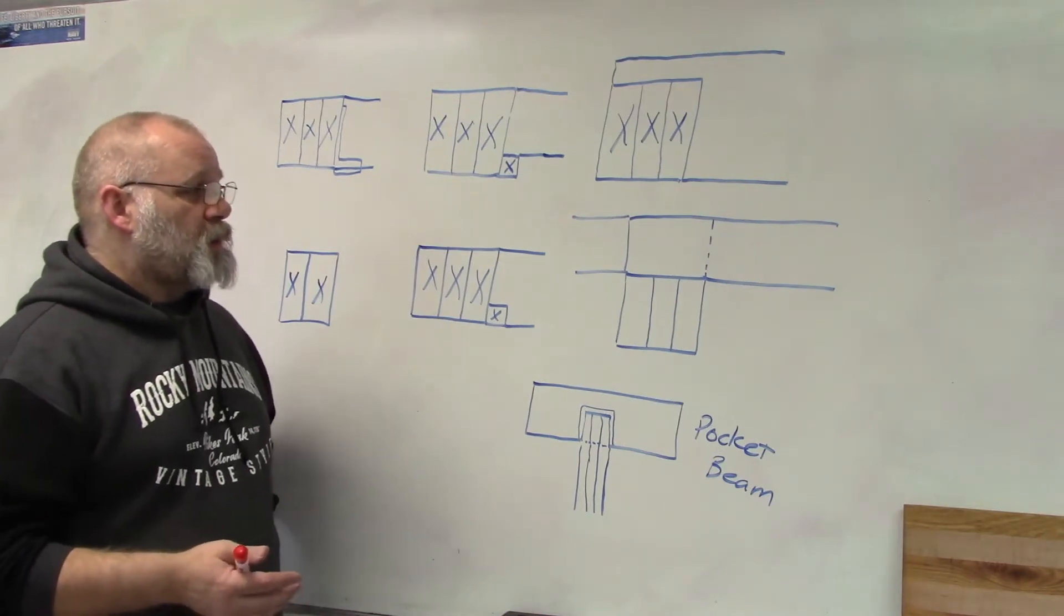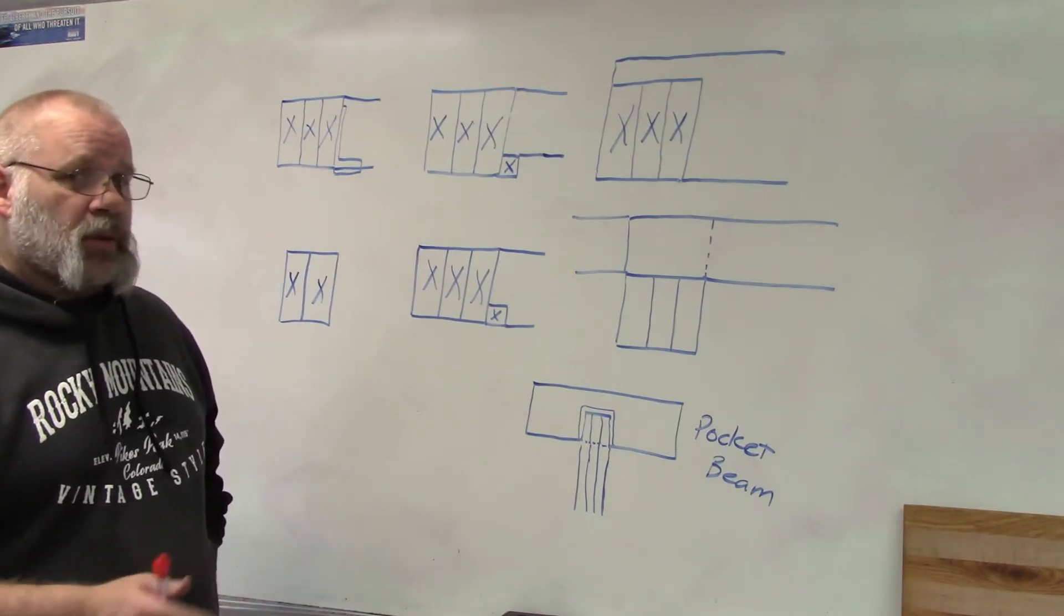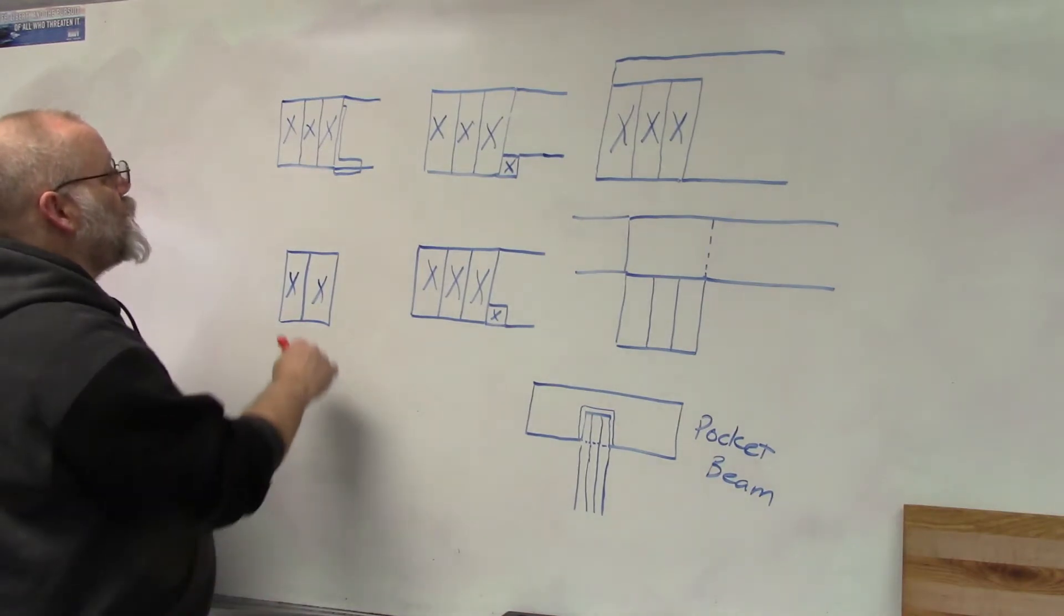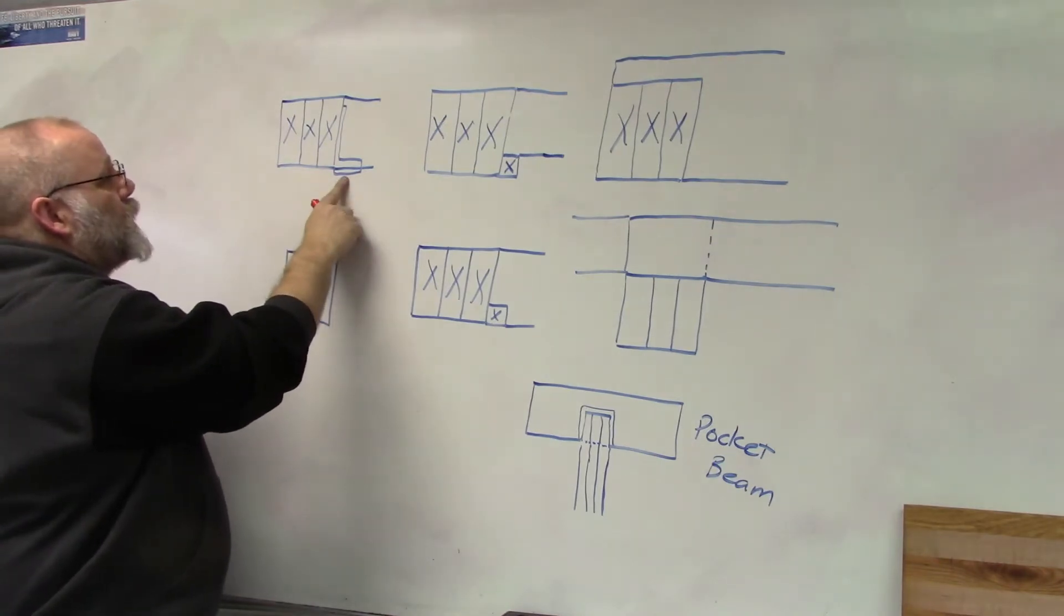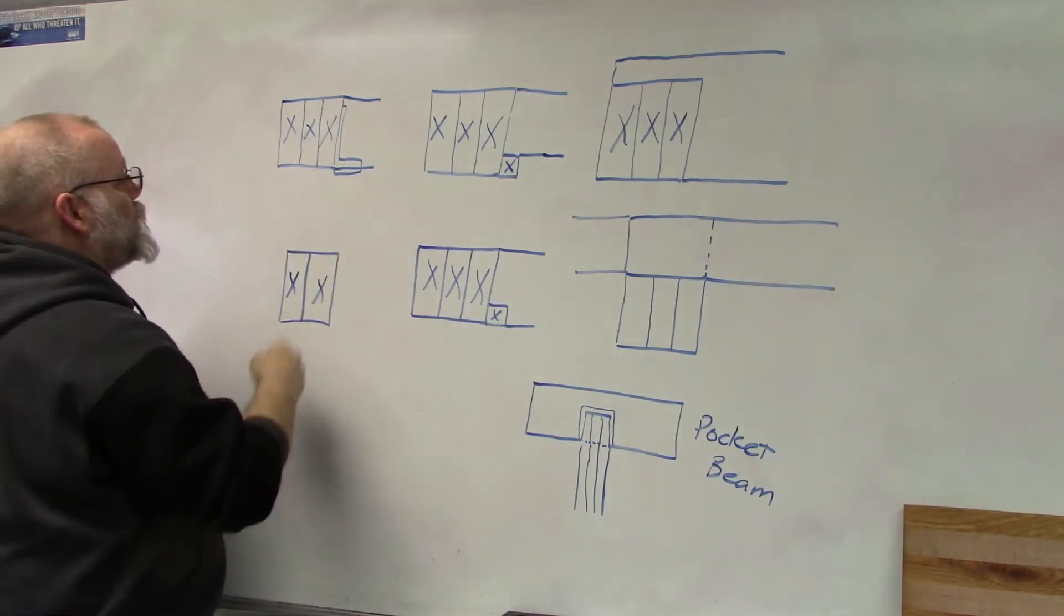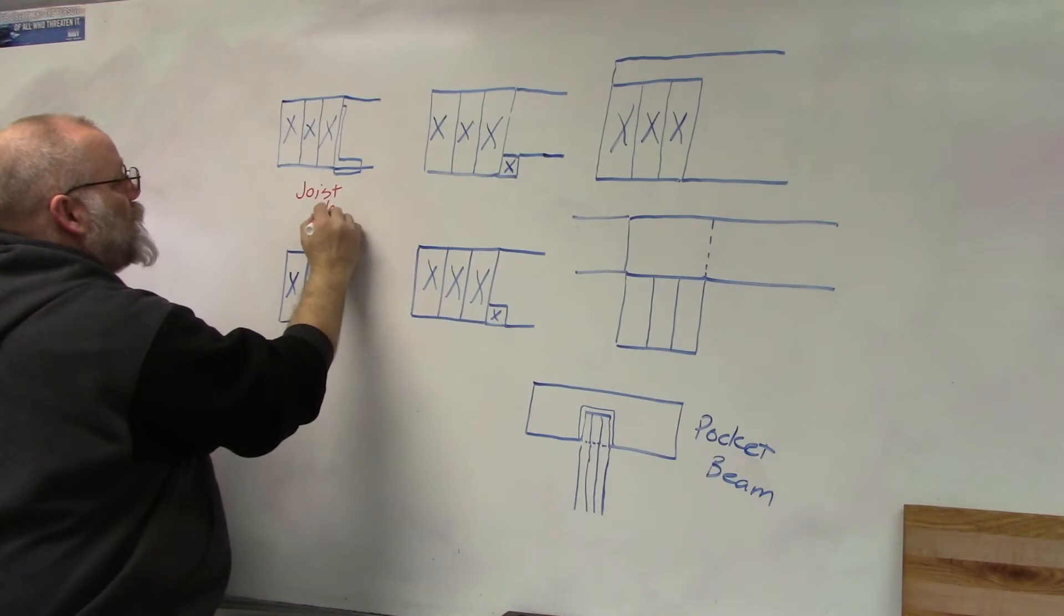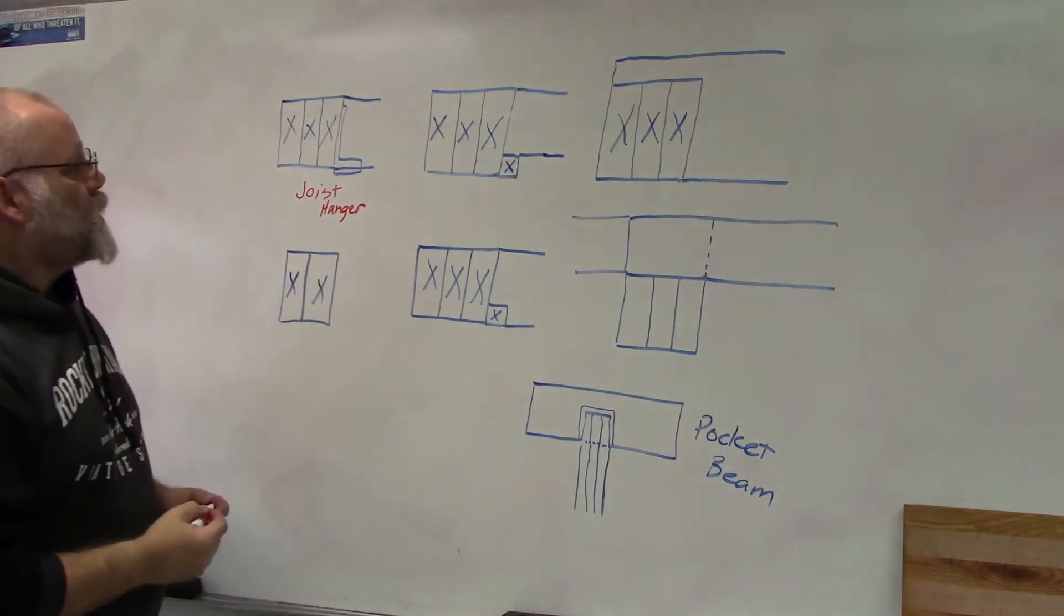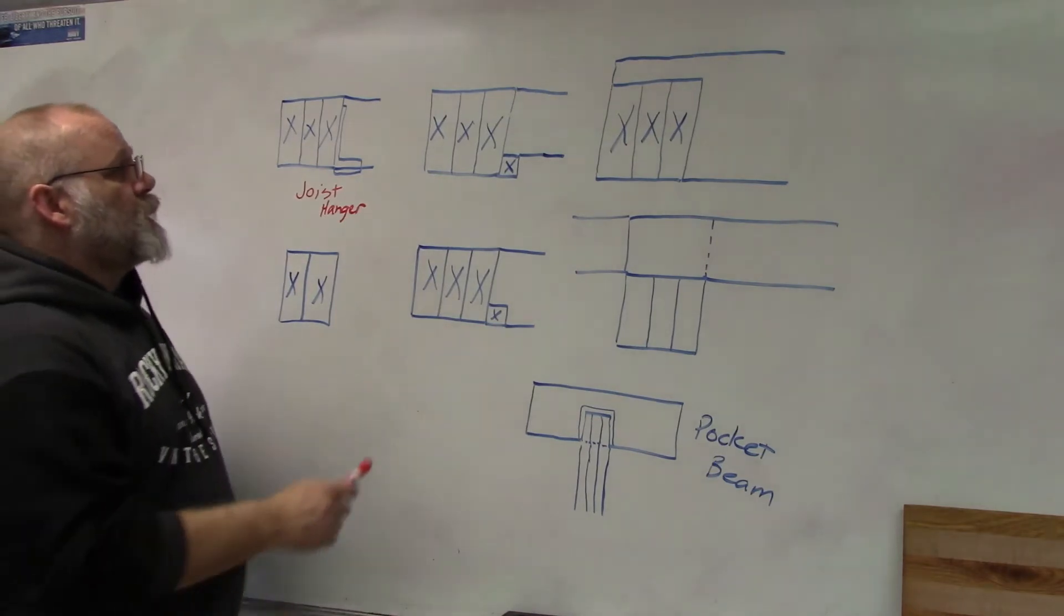So here's some of the different ways that you can run a beam and then run your floor joists into the beam. The first one up here is using a three-member beam and a floor joist with joist hangers. So this would be using joist hangers to hang all of the floor joists off of the beam.